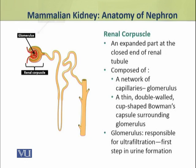The second part of the renal corpuscle consists of a thin, double-walled, cup-shaped structure which is called Bowman's capsule, and it surrounds the glomerulus.